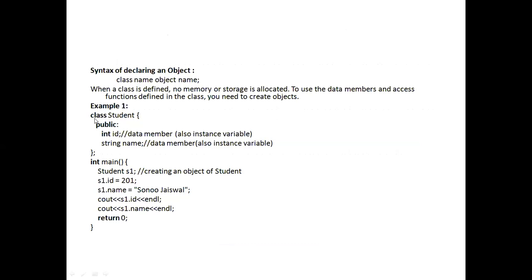Here you see: keyword 'class', followed by the user defined name 'student'. So 'student' is the name of the class. Then opening brace, then access specifier 'public', then a variable called 'id' of type integer, and a variable called 'name' of type string. When you go for other types of classes, here you can also give some member functions. Now, an object is nothing but an instance of a class — only when the object is declared is memory for that class given.